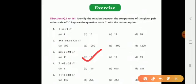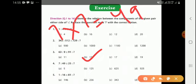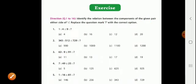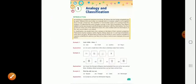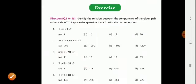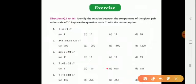Question four: Seven is to forty-nine as twenty-five is to what? Seven into seven is forty-nine, so twenty-five into twenty-five will be 625. Seven squared is 49, so 25 squared is 625. The right answer is 625.